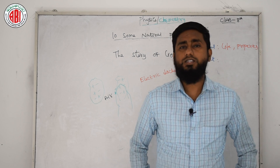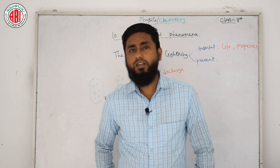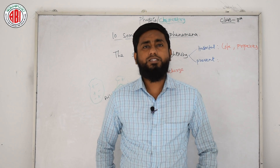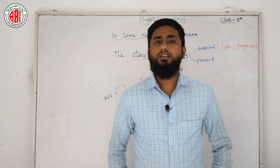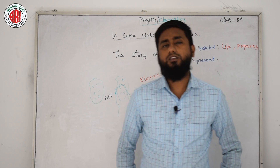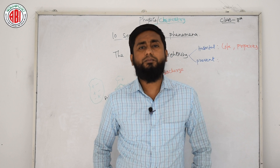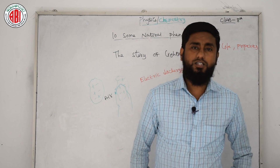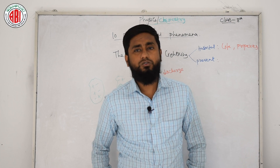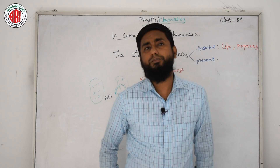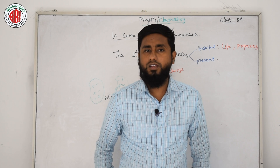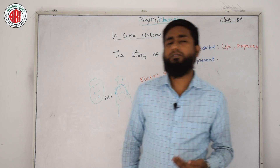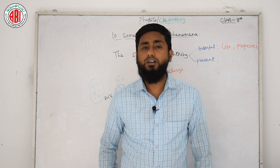Unsafe situations during thunderstorm: traveling in an open place — यानि open place में travel करना अच्छा नहीं है। Standing under tall trees in open fields, gardens, or parks। Staying in a multi-storied building which does not have a lightning conductor। Standing near electrical poles or telephone poles — यानि electrical pole या telephone pole के खरीब खड़ा होना भी harmful हो सकता है।